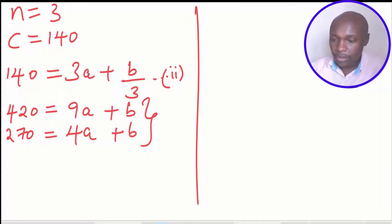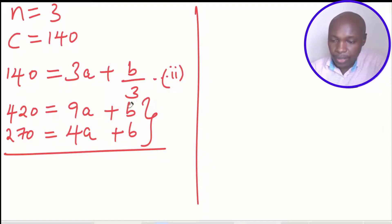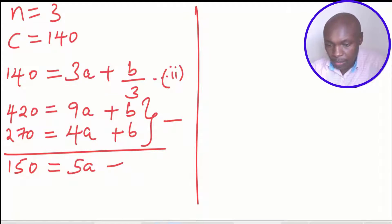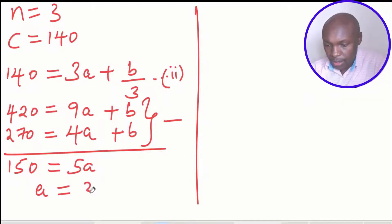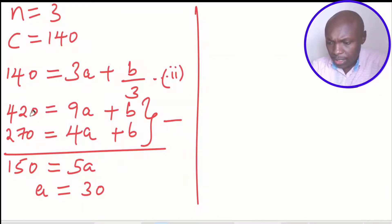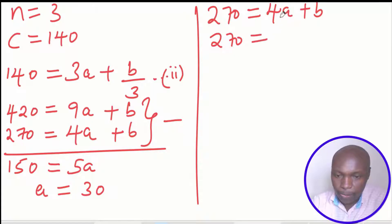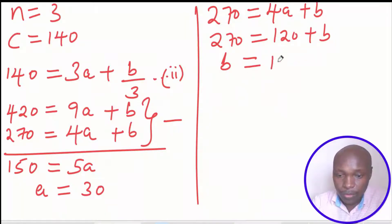To solve simultaneously we use elimination to eliminate B, since B is the same in both equations. Subtracting equation two from equation one: 420 minus 270 gives 150, and 9A minus 4A gives 5A. So A equals 150 divided by 5, which is 30. To find B, substitute A equals 30 into the second equation: 270 equals 4 times 30 plus B, giving 270 equals 120 plus B, so B equals 150.